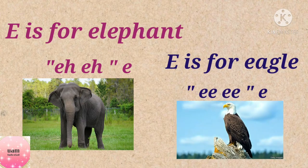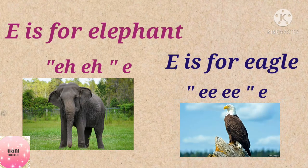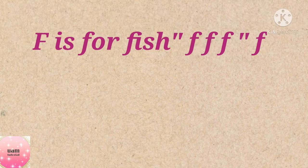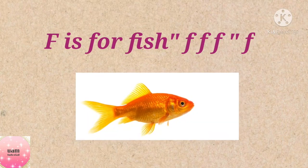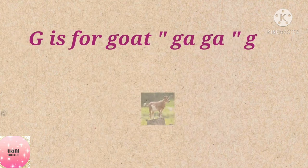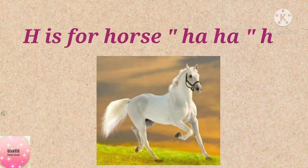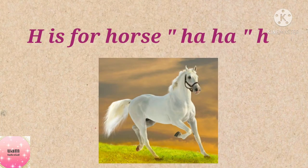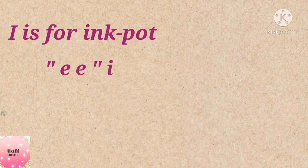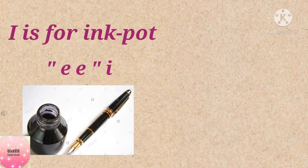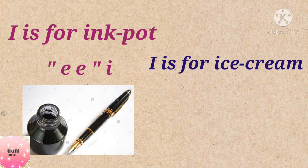E is for eagle, e e e. F is for fish, f f f. G is for goat, g g g. H is for horse, h h h. I is for ink pot, i i. I is for ice cream, i i.